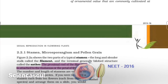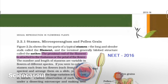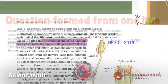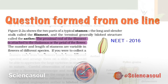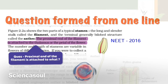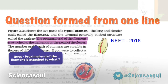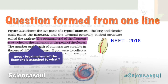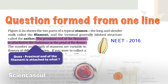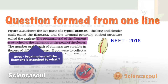Read every line because a question can be formed from a single line. For example, this question from NEET 2016 asks what the proximal end of the filament is attached to. If you read the line that it is attached to the thalamus or the petal of the flower, you already scored four marks.